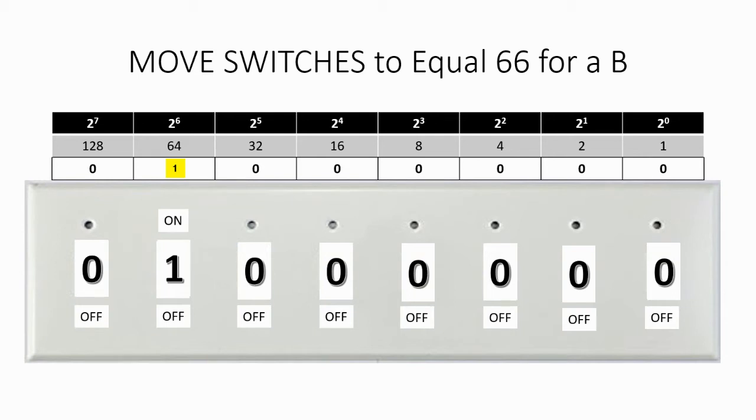Or if we do, does that put us over? So the next one is 32. If we add 32 and 64, that puts us over 66. So we'll continue moving down the line until we get to the value of 2. When we get to 2, we can turn that switch on because 64 and 2 gives 66.